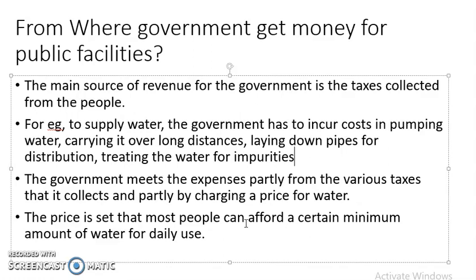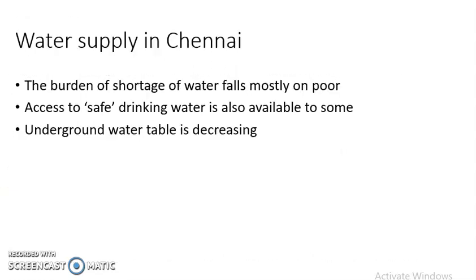The very important source of income for providing public facilities is taxes, and the government charges a price according to the affordability of the people. Now let us see water supply in Chennai. As we have discussed before, every section of people does not have equal access to water. Some people pay very high prices and get water, whereas in some areas there is an acute shortage and people depend only on the municipal water provided by the government.